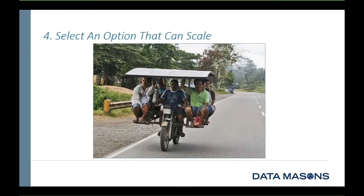Best practice number four: think about scalability. Organizations that don't think about the future will write a custom one-off for one partner, realize it doesn't work for another, and keep building more components — bringing in more ETL solutions like BizTalk, translators, and so forth — trying to build a complex infrastructure that eventually becomes untenable.